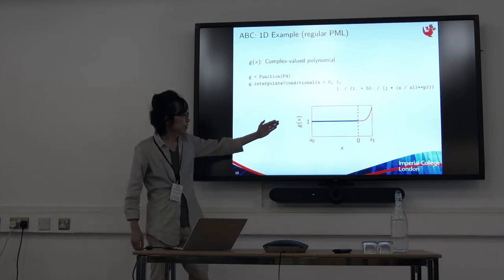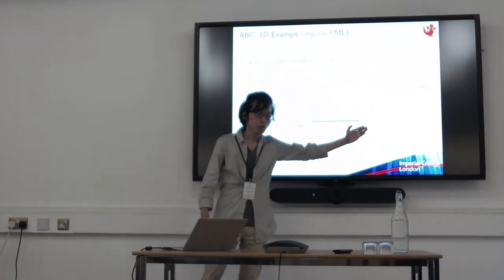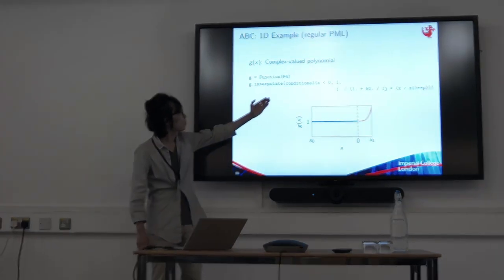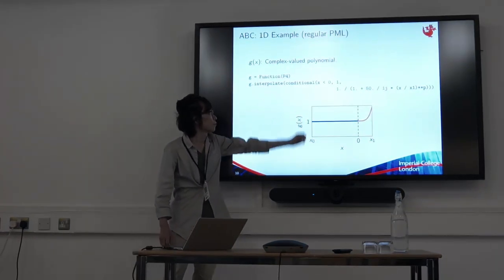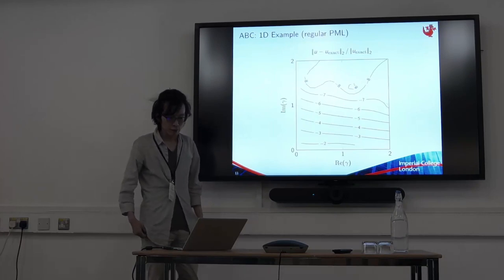Standard PML, G is 1 in the physical domain, and takes some complex polynomial profile in the artificial domain. We can do this in FireDrake using conditional. And the error is much smaller. Good.